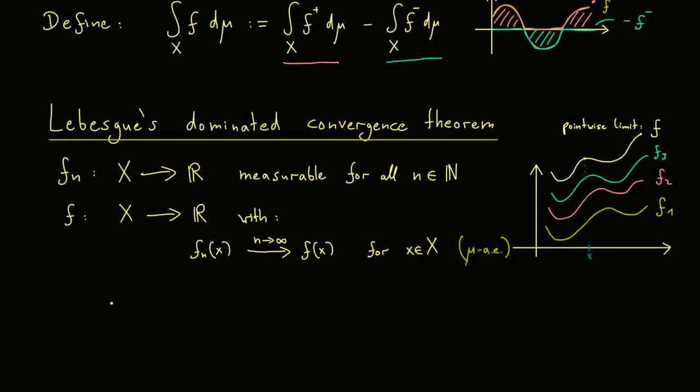If we add one more assumption. And this is where the dominated comes into play. We have that the absolute value of all these functions is bounded by a function g. Of course, you should read this pointwise. So if you put in an x here, this inequality holds. The function g now has the property that it's integrable, which means it comes from our L1 space. And obviously, it should be the same g for all n.